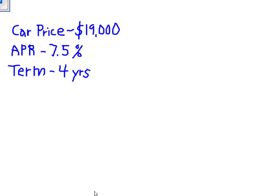So we go over here and we have a car price. We want to have a loan of $19,000 at an annual percentage rate of 7.5% and over a term of four years.